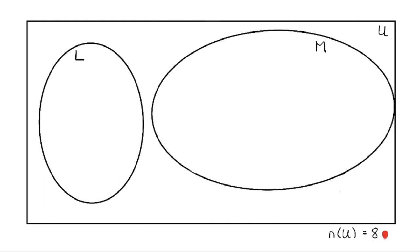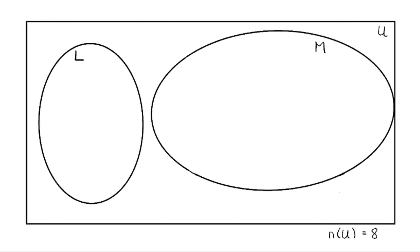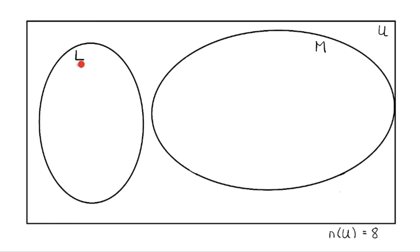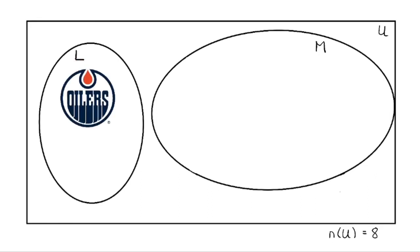There are currently eight teams in the Pacific Division of the NHL. I can categorize all eight teams of that division into what's called the universal set, represented by my rectangle on the outside. I'm going to use circles or ovals to represent my subsets, beginning with the team that I love, the Edmonton Oilers. I can also throw the Los Angeles Kings into there, because Wayne Gretzky did eventually go onto that team.